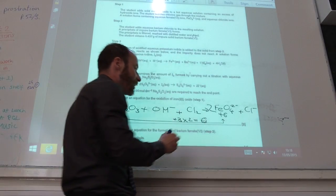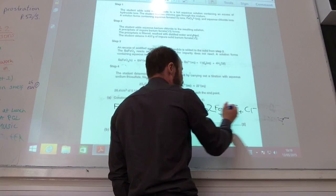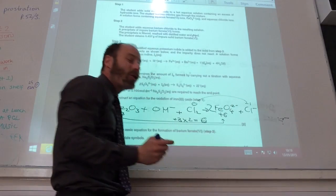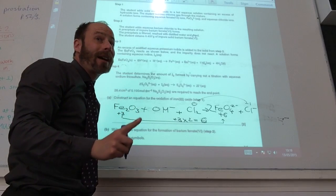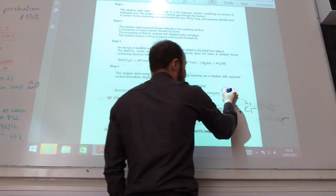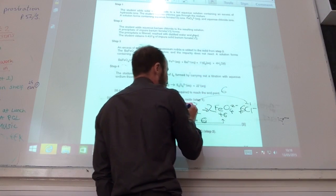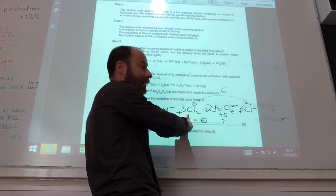The other thing that's changed oxidation number is chlorine. Chlorine is zero there and minus one there. So each chlorine changes by one. So you've got to have six chlorides there, and that means I've got three there.